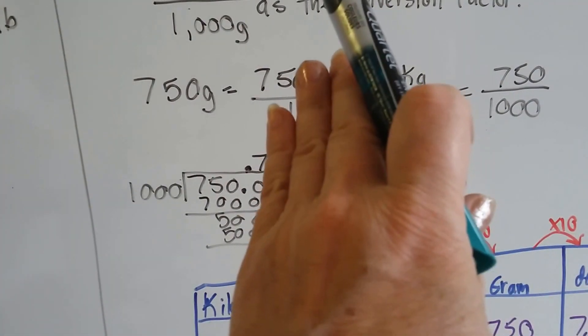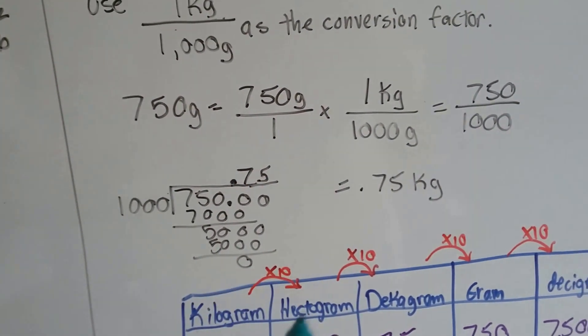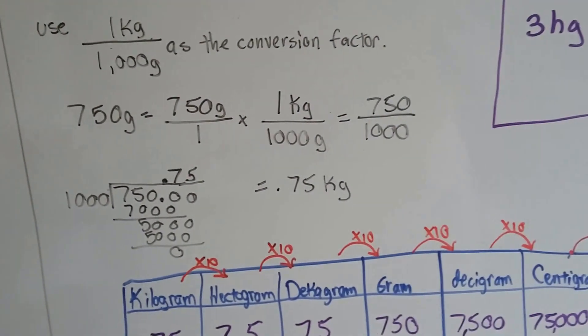1,000 goes into 7,500 seven times. Then we added another zero in the five, and we got 0.75. So the puppy weighs 0.75 kilograms.